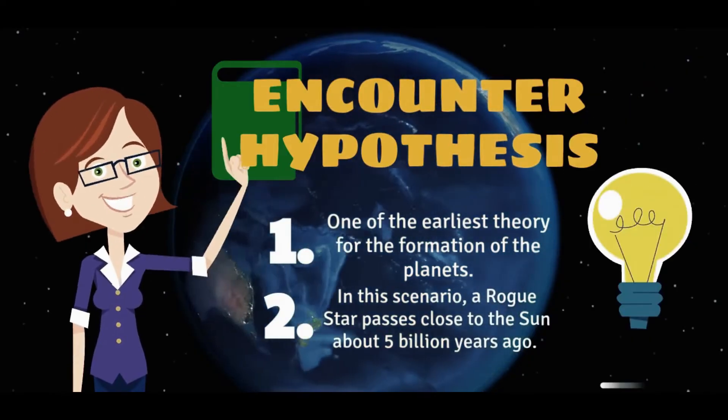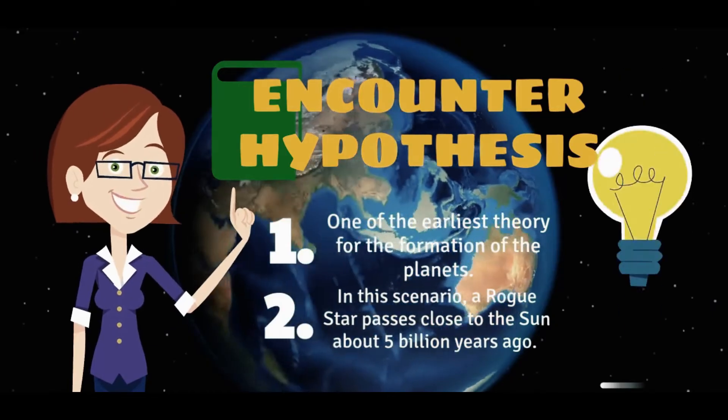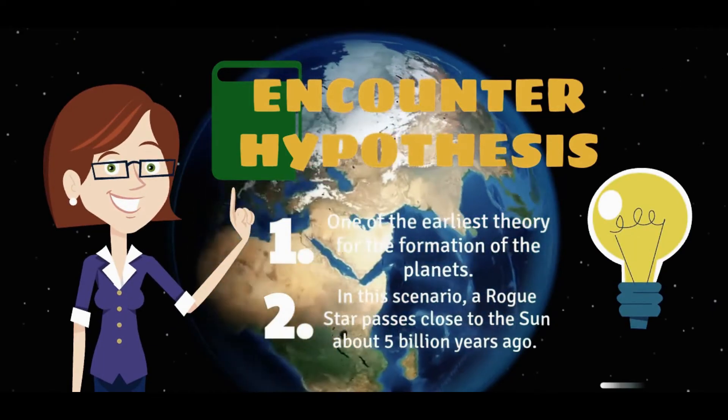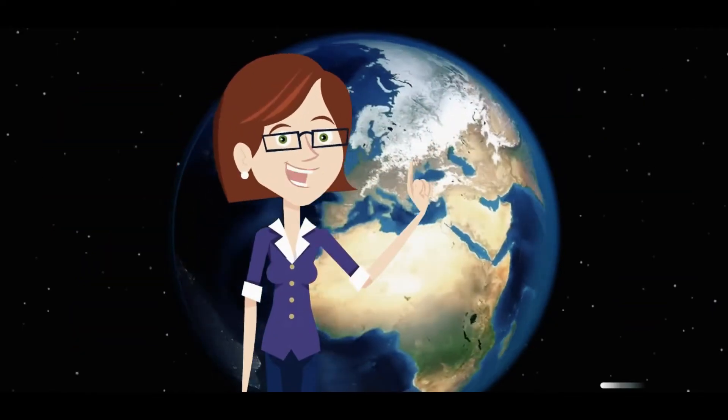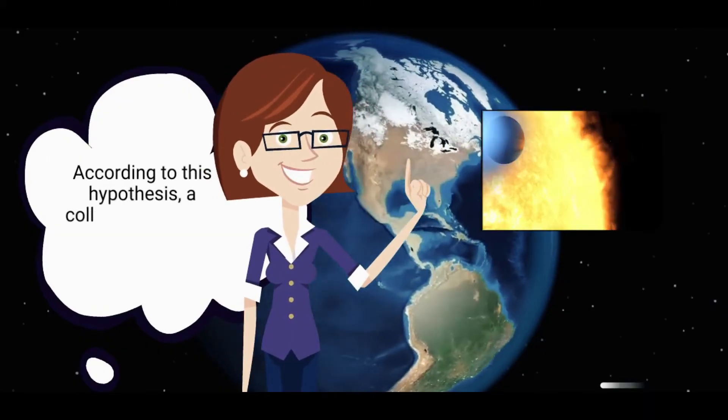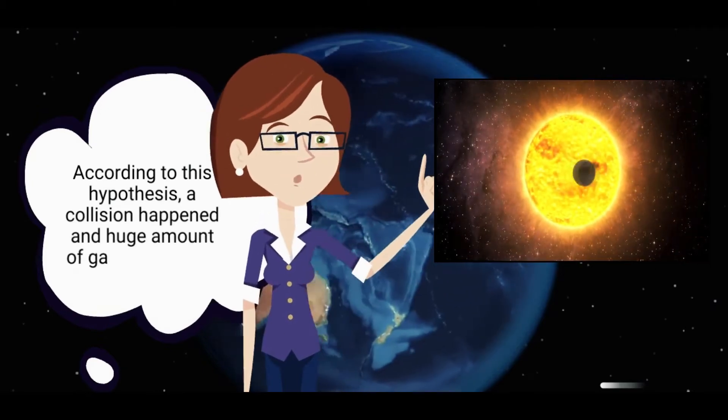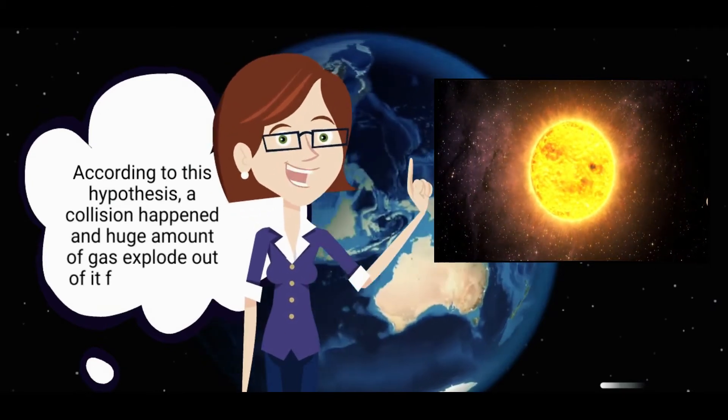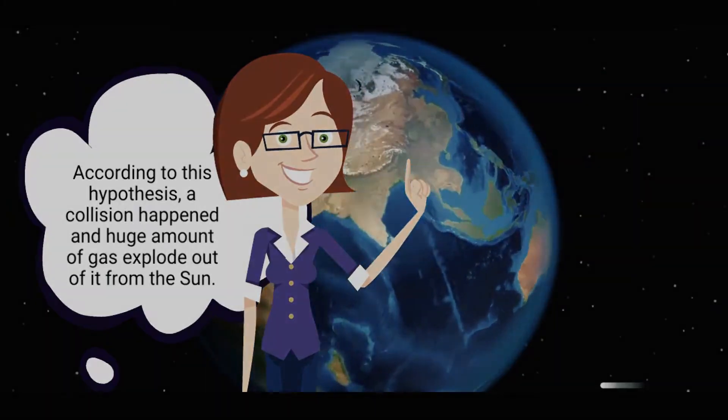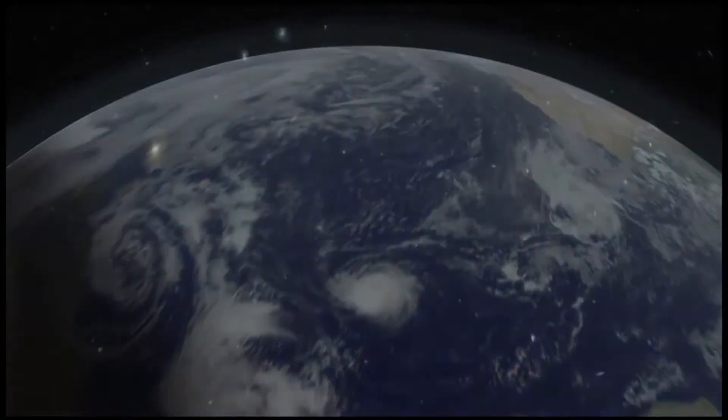In this scenario, a rogue star passes close to the sun about 5 billion years ago. According to this hypothesis, a collision happened and a huge amount of dust exploded out of the sun. Materials in the form of hot dust is tidally stripped from the sun and the rogue star. This material forms the planets.